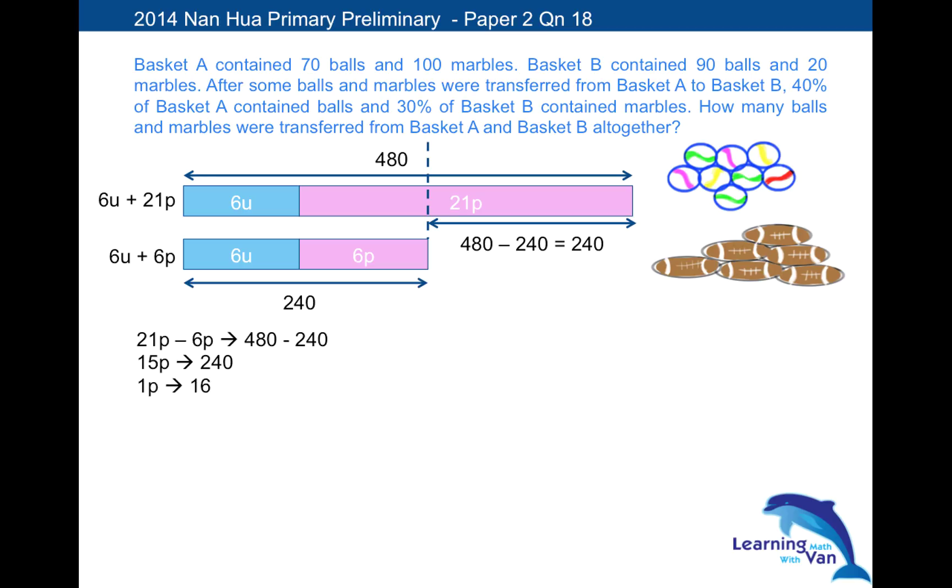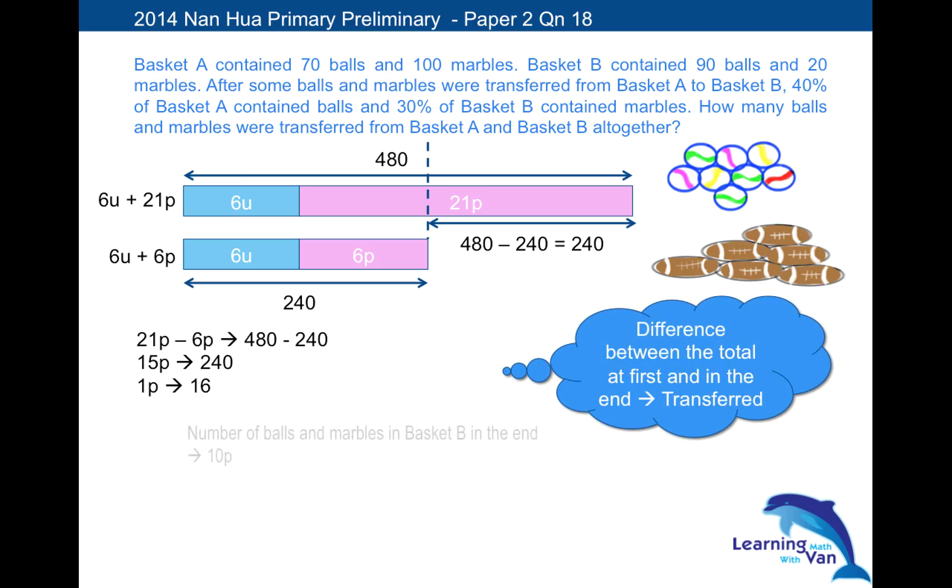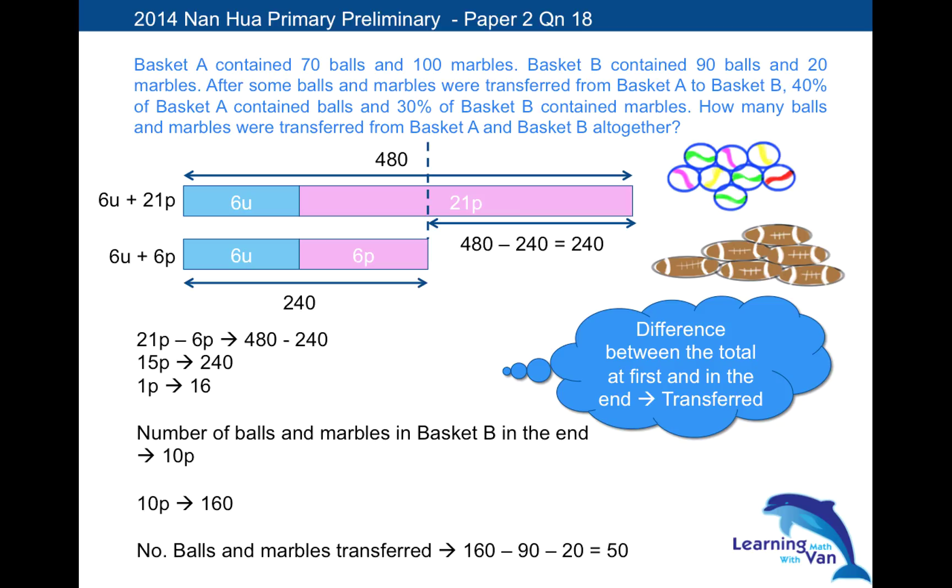So answer the question now. How many balls and marbles were transferred from basket A and basket B altogether? In order to know how many were transferred, you need to know what's the total number of balls and marbles in the basket in the end. Because we were given at first. And since we have worked out what is the value of P, it's easier to refer to basket B. Because you remember early on, basket B was assigned parts. And we assigned 10 parts for basket B. So what is 10 parts? 10 parts is equal to 160. So with that, this is in the end. And we have total. The total number of balls and marbles at first is 90 plus 20. So we just take away. So the number of balls and marbles transferred will be 160 minus 90 minus 20, and they give you 50.